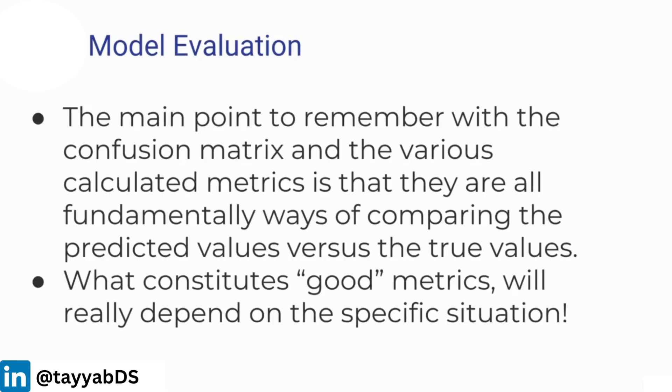The main point to remember of the confusion matrix and the various calculated metrics is that they are fundamentally ways of comparing the predicted values versus the true values. And what constitutes good metrics will really depend on the specific situation. In some situations, 99% accuracy is fantastic. In other situations, 99% accuracy may actually not be good enough because maybe it comes at the cost of really poor precision and poor recall.